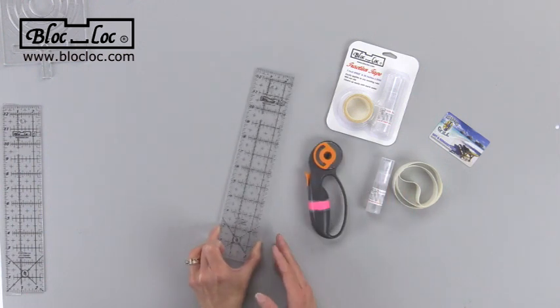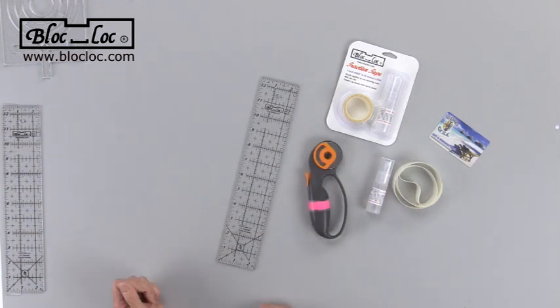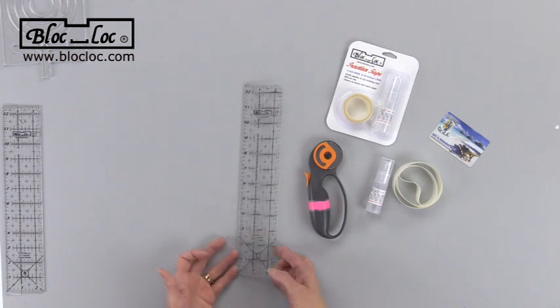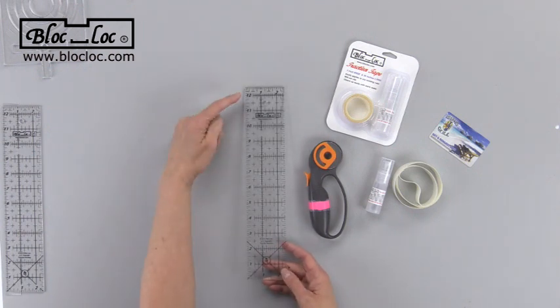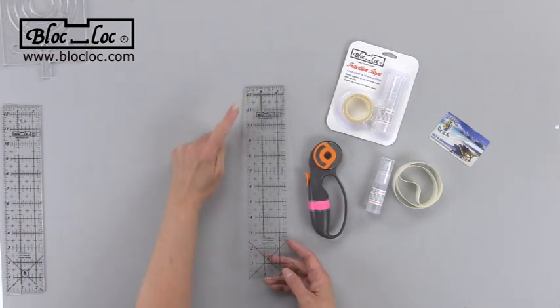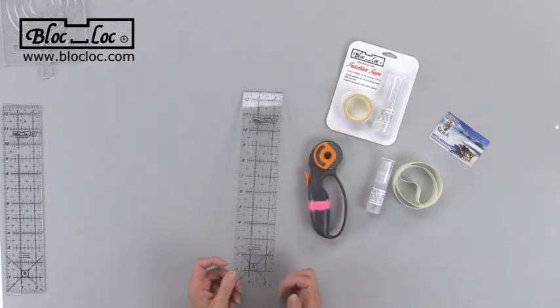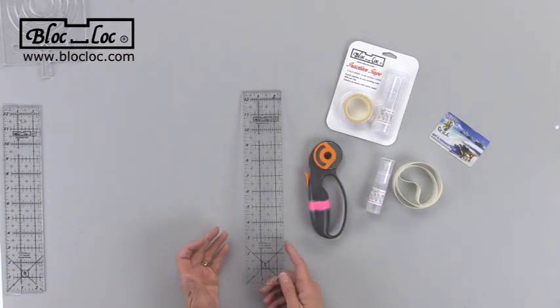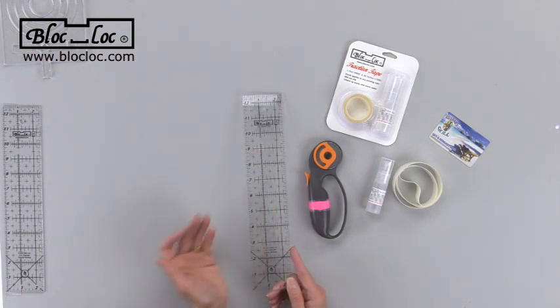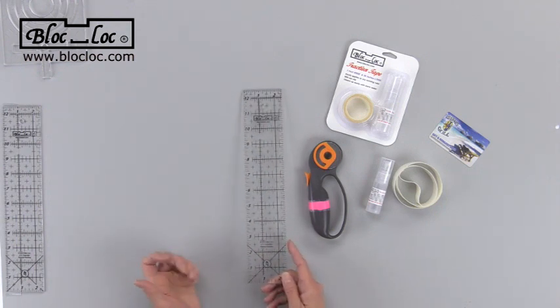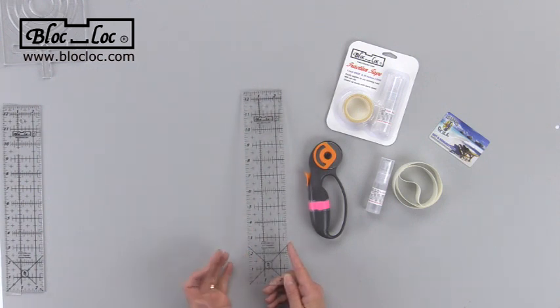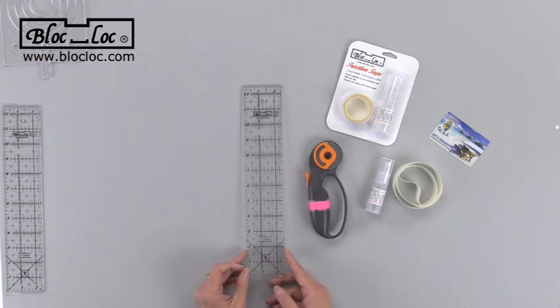The next thing is you need to plan where to apply it. I've got a left-handed ruler from Block Lock here, so I want to apply it to the left side of the ruler. If you're right-handed, you're going to want to apply it to the right side. What you don't want to do is put it in the middle of the ruler because that's not really going to help you much. It needs to be along the leading edge of where you're going to be using it.